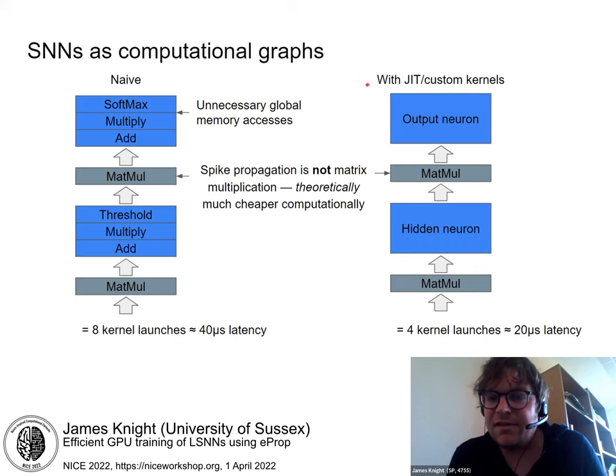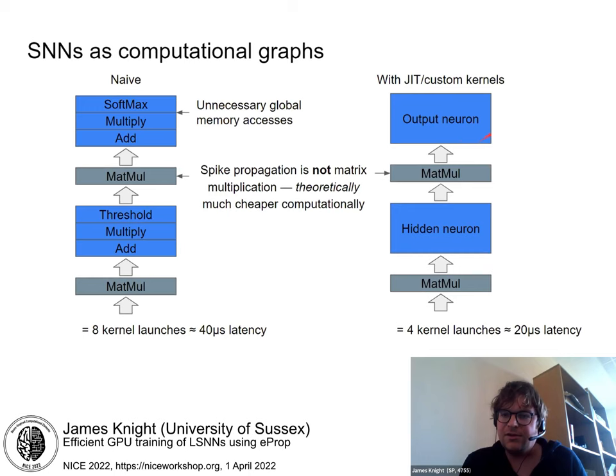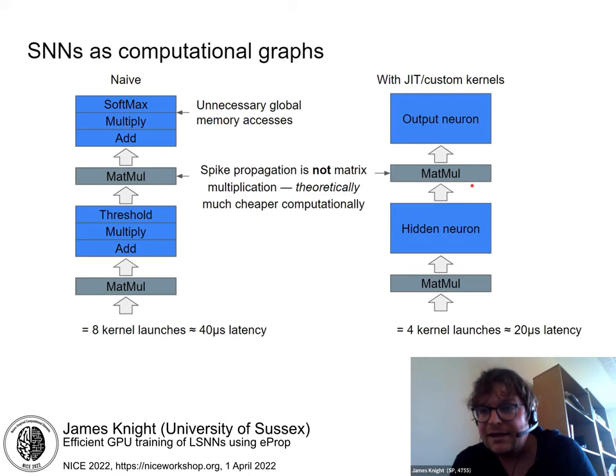Many libraries improve this using just-in-time compilation or custom kernels that merge all the kernels for each neuron together. This does reduce latency — in a small example it halves it — but the latency still increases with model depth, which is not great. Also, spike propagation is not matrix multiplication. If you can harness it, it's just adding up the weights of the rows of the matrix where spikes occur, which should be much cheaper.